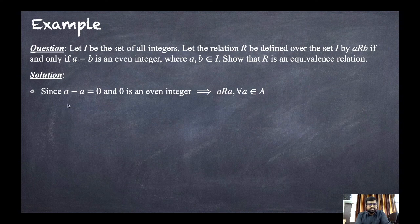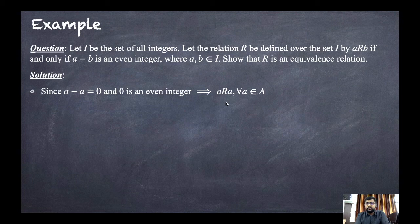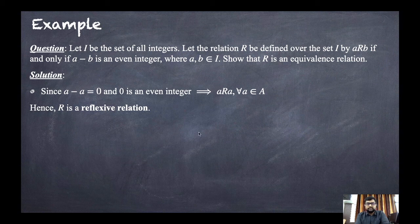Since a minus a equals zero, and zero is an even integer, this implies a is related to a for every a in I. Hence R is a reflexive relation, and the first axiom holds. Now for the second axiom — symmetry: if a is related to b, then b must be related to a.